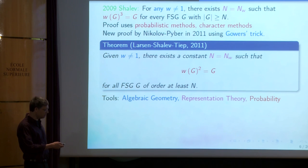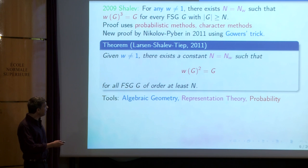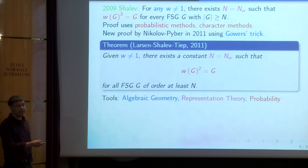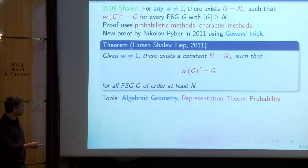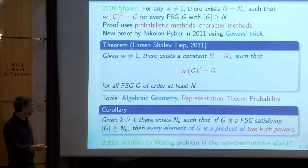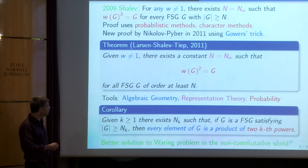This result was improved. In a joint work with Larsen and Tiep, we showed that we can reduce the three to two: instead of wG^3, we have wG^2. So every element of a finite simple group is a product of two word values if the finite simple group is sufficiently large. It's quite a long and complicated proof using algebraic geometry, representation theory, and probabilistic ideas.